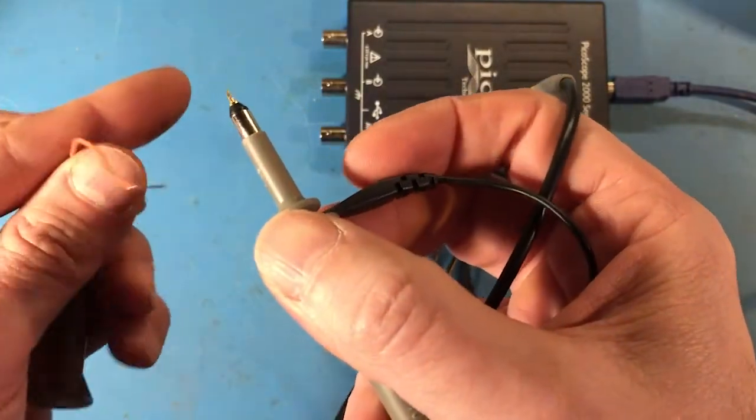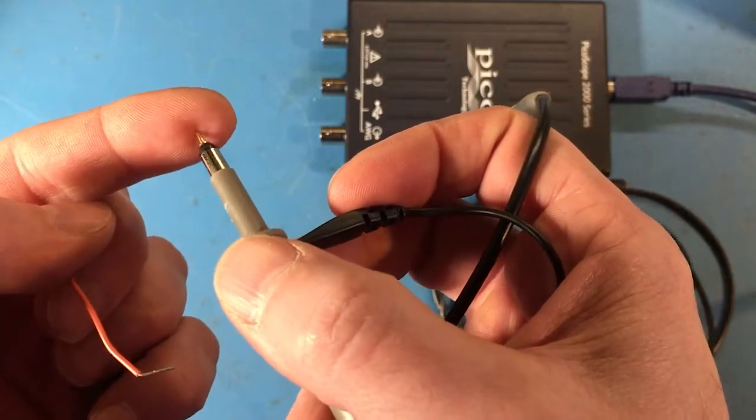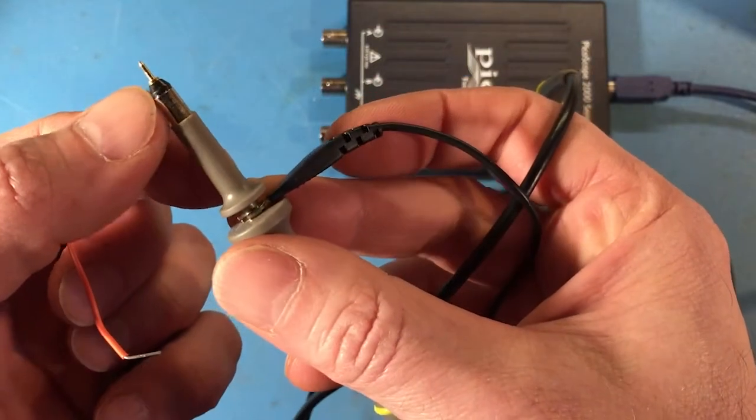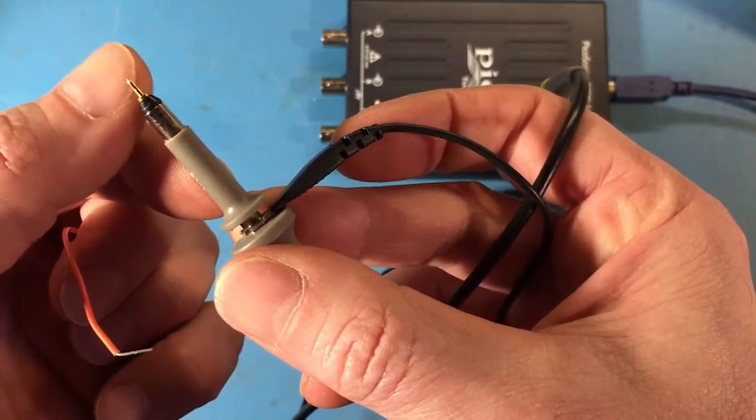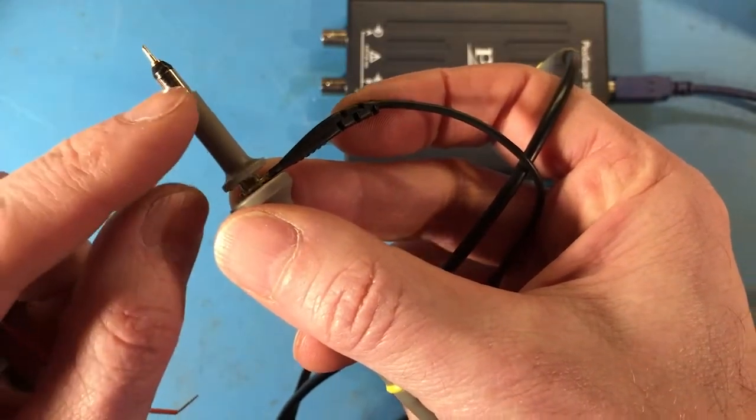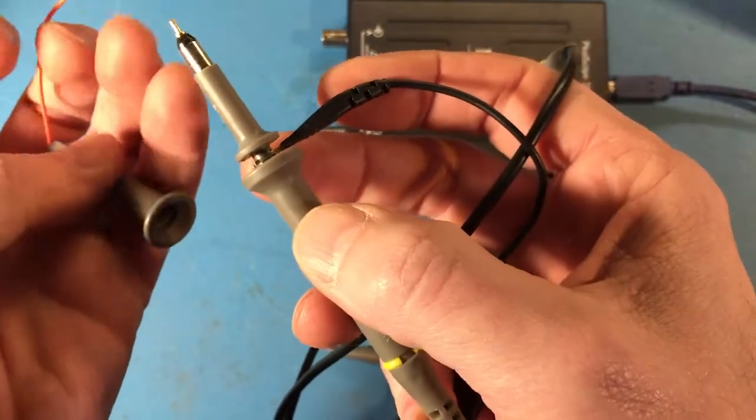So I could probe something if I wanted to measure the voltage on my fingertip, I could probe my fingertip with that. So note the silver band around here is the ground. So the gold tip is the signal input, and the silver band is the ground. We know we're measuring voltage, so we need the reference and then the actual signal measurement. We need two terminals, and they're right there.